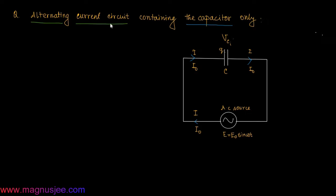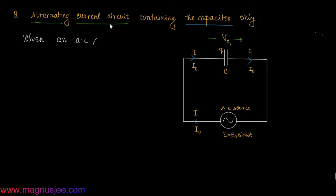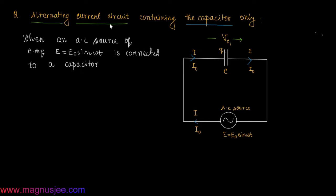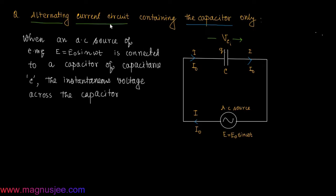We denote the voltage or potential drop across the capacitor as vc. When an AC source of EMF e = e0·sin(ωt) is connected to a capacitor of capacitance C, the instantaneous voltage across the capacitor C is given by vc(i) = e, where e is the instantaneous EMF of the alternating current source.